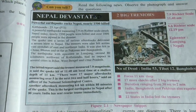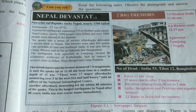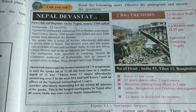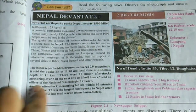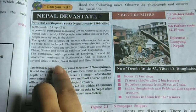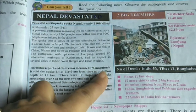Question: Where was the epicenter of the earthquake? Lamjung in Nepal was the epicenter. Question: Which are the other affected areas? The other affected areas were Bihar, West Bengal and Uttar Pradesh, and Bhutan, Pakistan and Bangladesh were also affected by the earthquake.